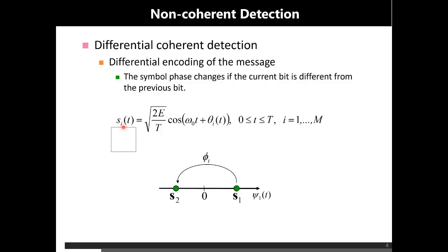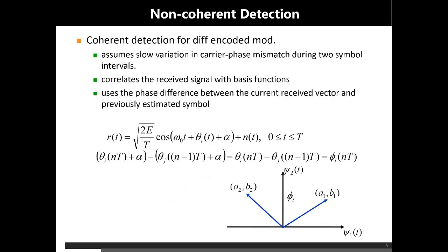If Si(t) is the transmitted pulse, the information will be encoded in the phase as in phase shift keying, but in a differential manner. The phase phi_i will depend on the previous pulse. The main basis for using differential phase shift keying is the assumption that there is very slow variation in the carrier phase mismatch during two symbol intervals, because information is now mounted on the difference in phase — the differential phase. It is very important that variations in the phase mismatch are very slow so that when we take the difference between the phases of two consecutive symbols, that slow variation is cancelled out.